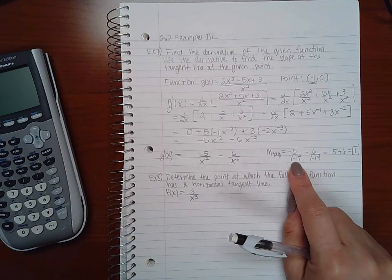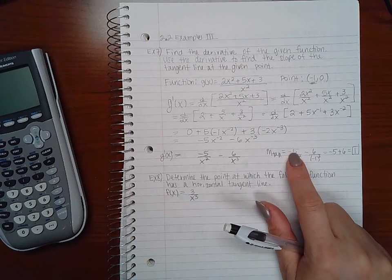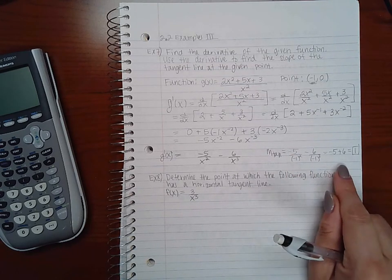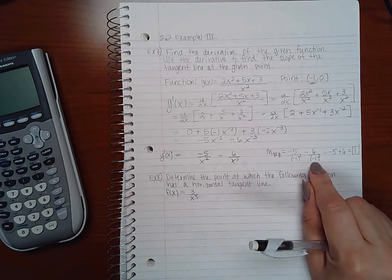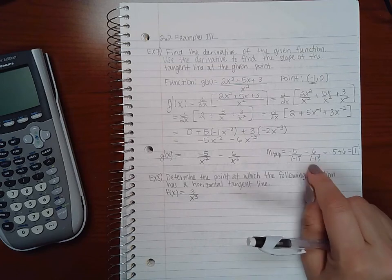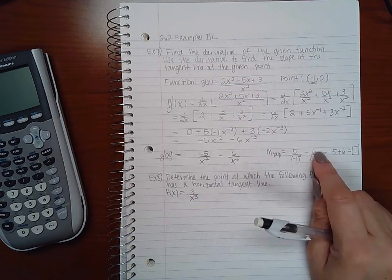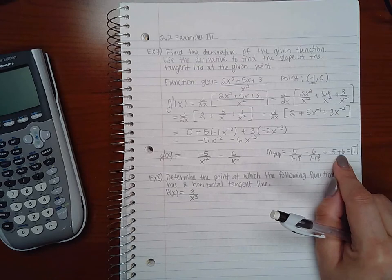This negative times a negative will be a positive 1, and negative 5 over positive 1 is negative 5. This will be negative 1 times negative 1 times negative 1, which is a negative 1, and negative 6 divided by negative 1 is a positive 6.